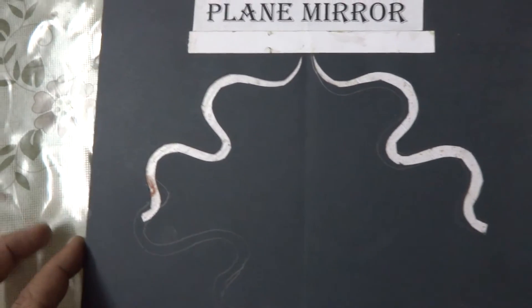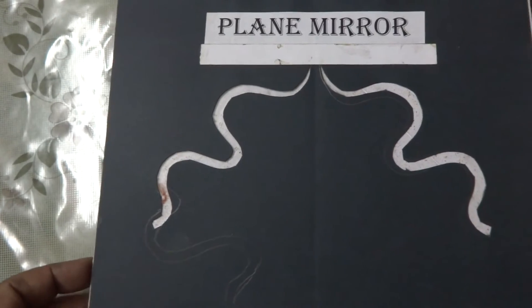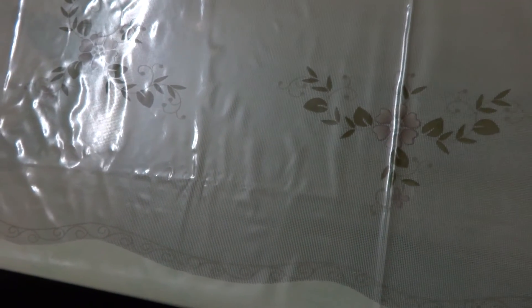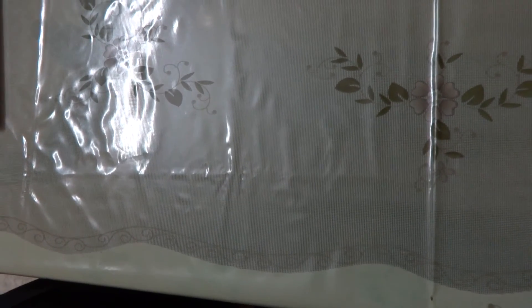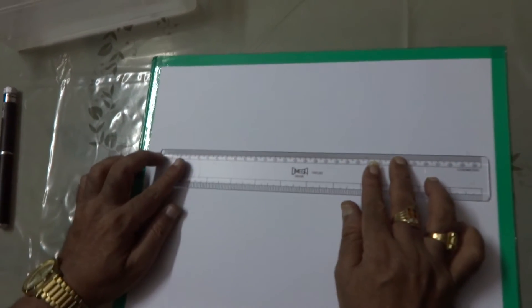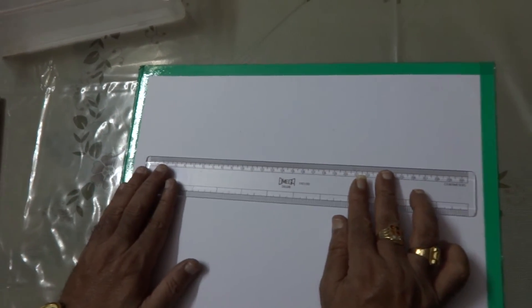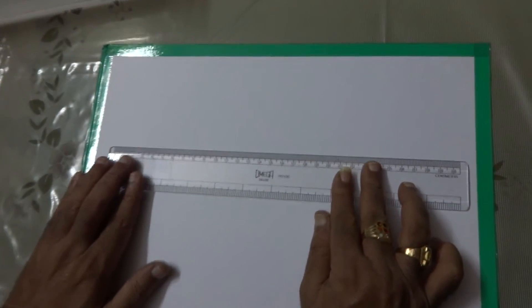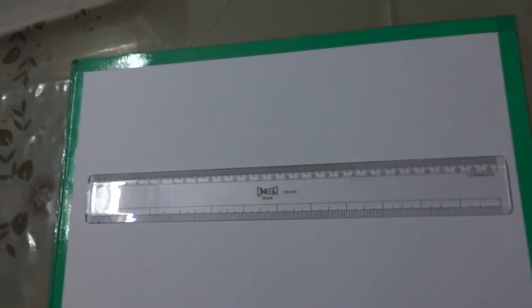Now, the question comes when both the two theories, particle as well as the wave theory, are able to explain the laws of reflection. You have studied already the ray optics part. Now, let us talk about the wave optics. How Huygens wave theory can prove the laws of reflection.